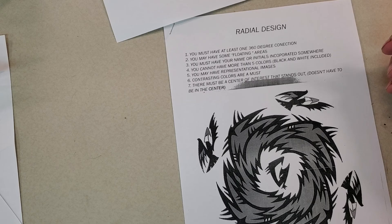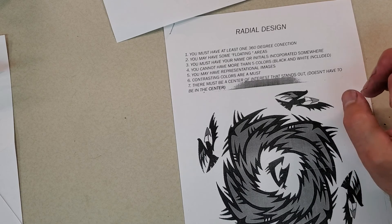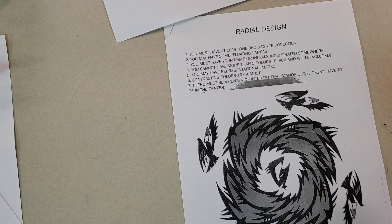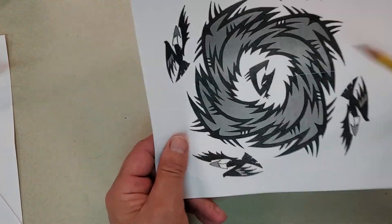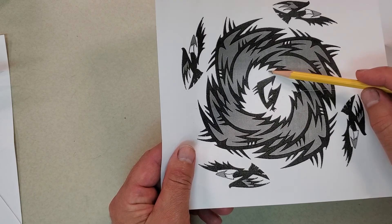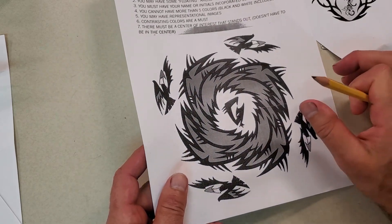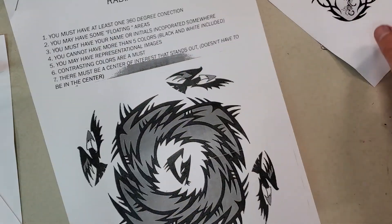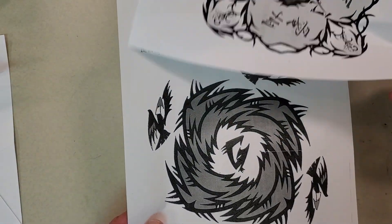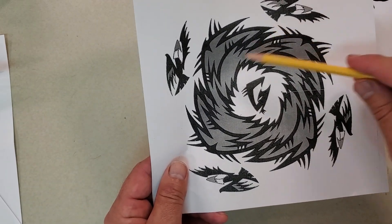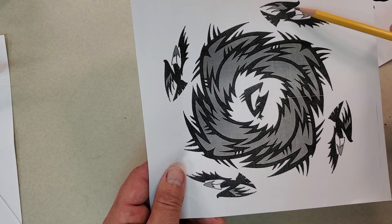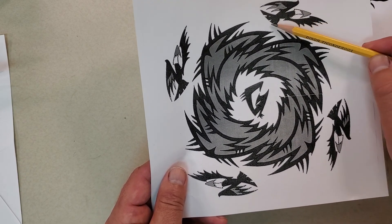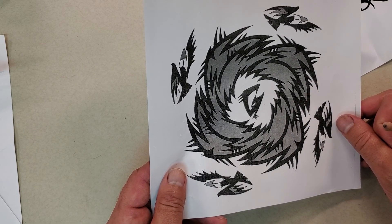There must be a center of interest that stands out — something that stands out because of a different size, shape, or color. In this particular one, it would be the peacock — it's different than everything else. On this one, it happens to be this logo which is a letter G. You have to have something that stands out, but it doesn't necessarily have to be in the center. For example, if all these eagles were red and all of a sudden you have one eagle that's blue, that would be your center of interest — just that one thing that's a different size, shape, or color.